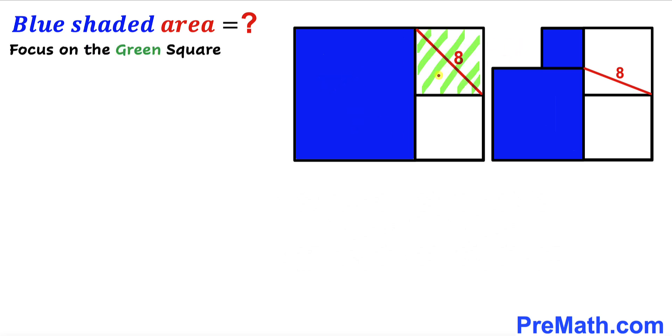Let's focus on this green square. Assume this side length is x, then this side length is also x. Now we'll apply the Pythagorean theorem on this right triangle.